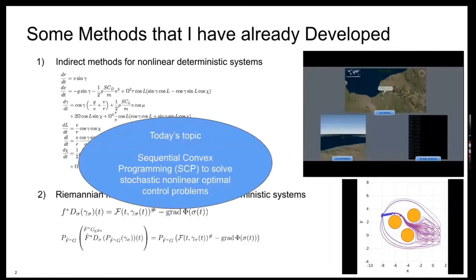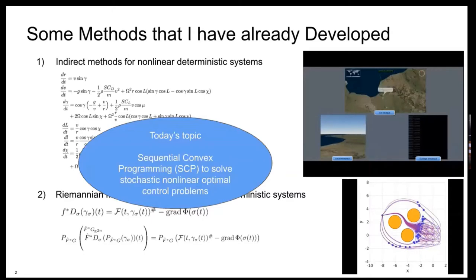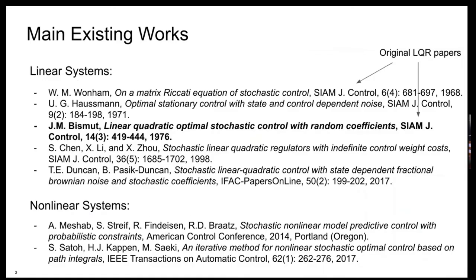But today I would like to focus on another method that we found very interesting and promising for solving stochastic optimal control settings, which is named sequential convex programming. So let me very quickly review the literature that has been done so far on stochastic optimal control in general.